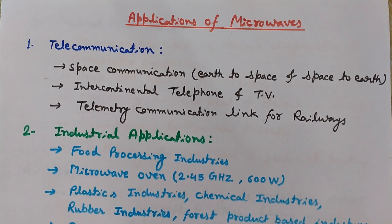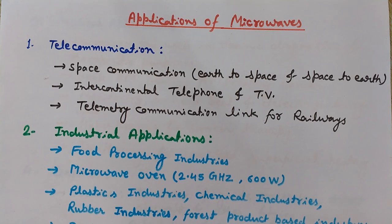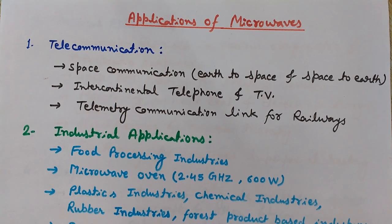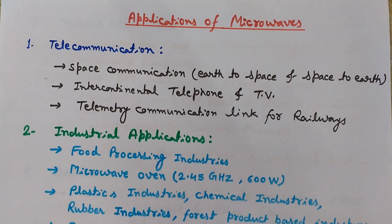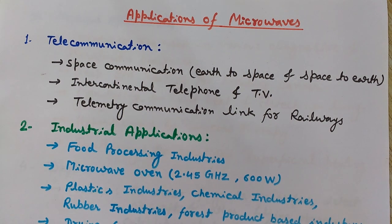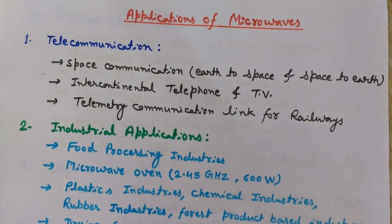If you convert a wavelength of 1 foot, that is 30.5 centimeters, into frequency, it would approximately be 1 gigahertz. So all frequencies in the range of 1 gigahertz and above, up to 1000 gigahertz, come under microwave frequencies. Now let's discuss the applications of microwaves in various fields: telecommunication, industries, medical, defense, and other miscellaneous applications.